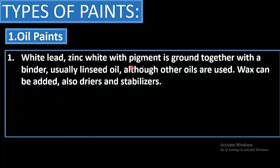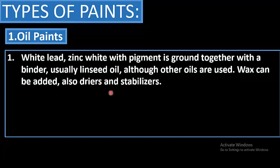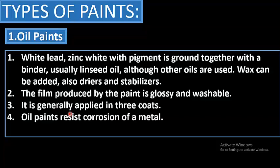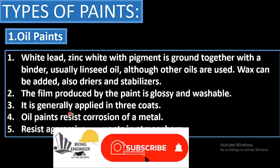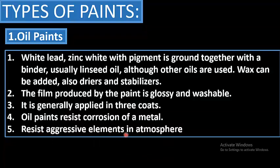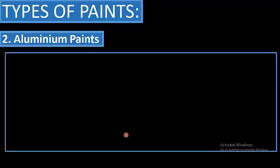Oil paint: zinc white with pigment is ground together with a binder, usually linseed oil, although other oils are also used. Wax, dryers, and stabilizers can be added. The film produced by oil paint is glossy and washable, generally applied in three coats. Oil paints resist corrosion of metal and aggressive elements in the atmosphere.